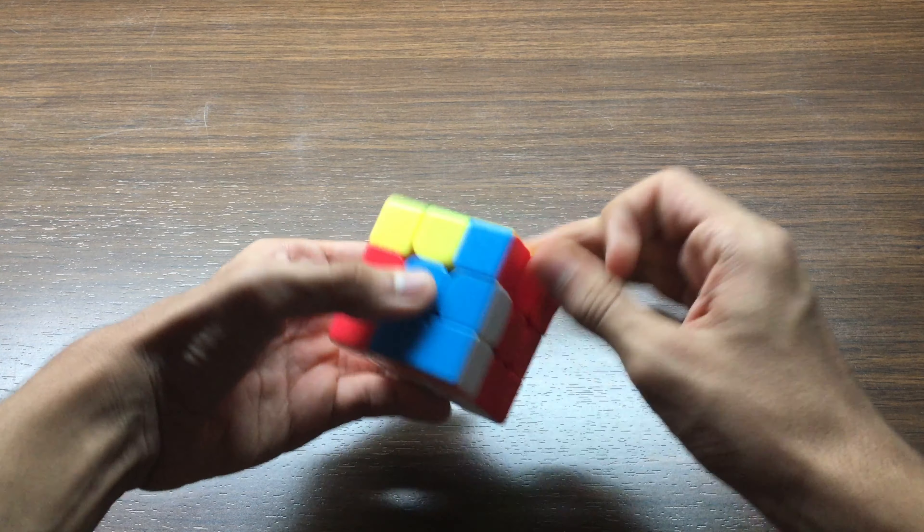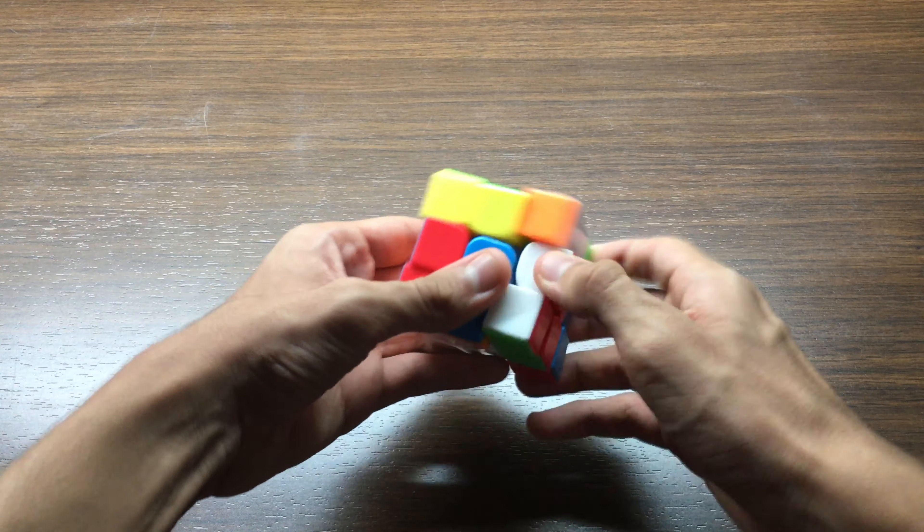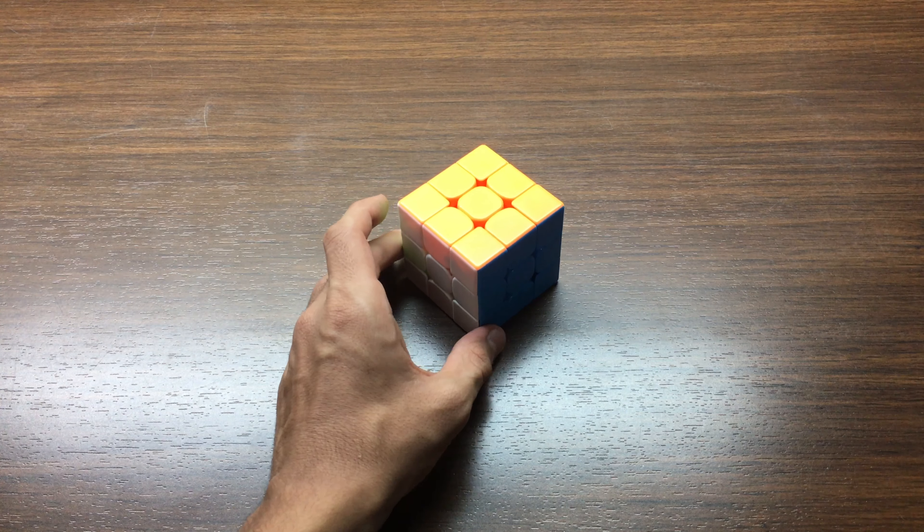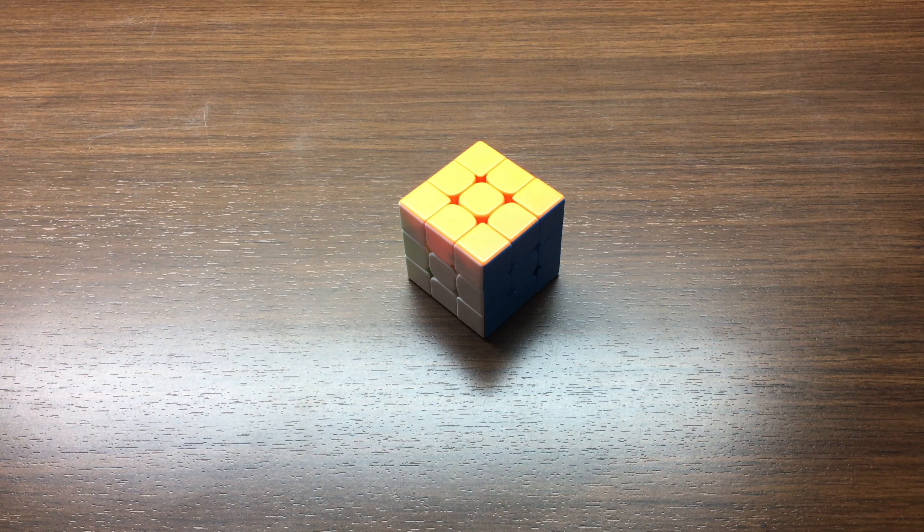Moving on to 3x3, this is my main the Mofang Gyoushi MF3RS 2M. My goals for 3x3 are to get a couple of sub 14 averages, maybe even sub 13 averages and a sub 11 single.